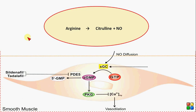In this video we are going to discuss the signaling pathway of nitric oxide — it is basically a vasodilatory pathway. We study this pathway in relation to the vascular endothelial cell and the vascular smooth muscle cell.